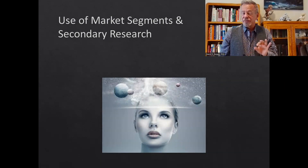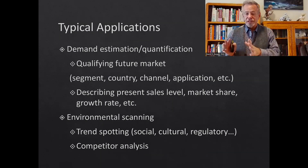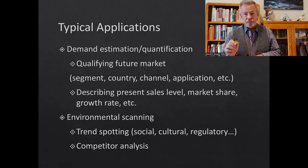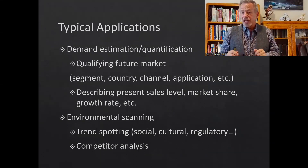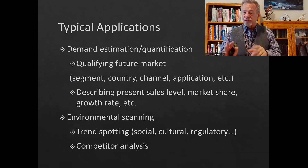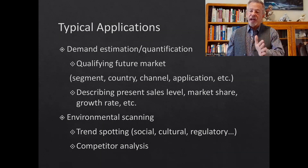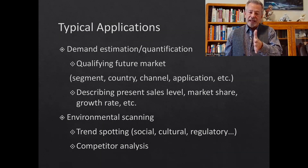Let's take a look at how we're going to use different market research and how we use secondary research. A lot of times you want to look at demand and how you're going to qualify your future market. You start paying attention to how markets shift rapidly — you'll see changes in just a matter of months. In the fashion industry you'll see changes in color; in the car industry you'll see cars designed for a specific gender, appealing to that specific market, with different colors and styles.